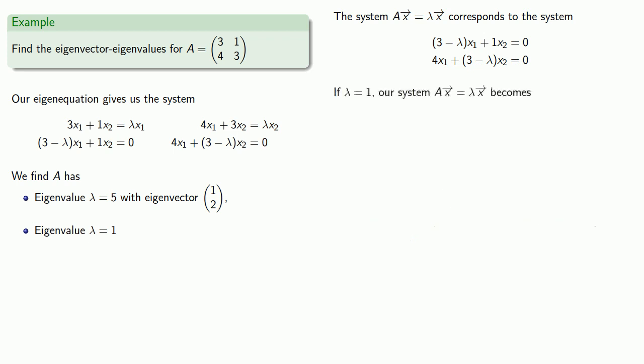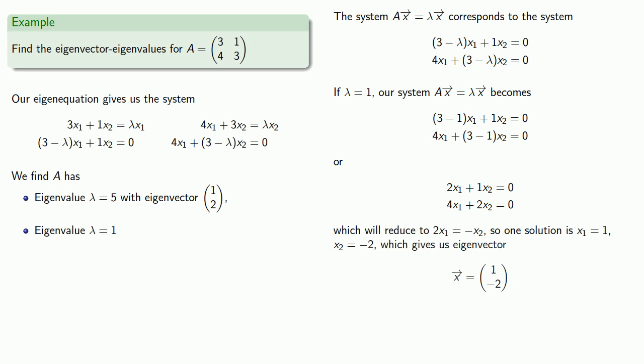For lambda equals 1, our system ax equals lambda x becomes, which simplifies to, which will reduce to 2x1 equals minus x2. So one solution is x1 equals 1, x2 equals minus 2, which gives us the eigenvector.